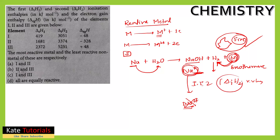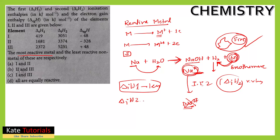So the second ionization enthalpy is very high. For the most reactive metal, delta H_i1 should be very low because it should easily form Na⁺ spontaneously, and delta H_i2 should be very, very high because Na²⁺ doesn't exist stably. Looking at the data, the first ionization enthalpy compared to the second ionization enthalpy shows that element one is the most reactive metal.